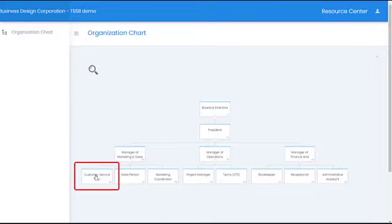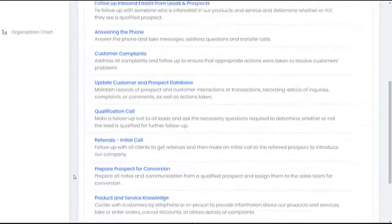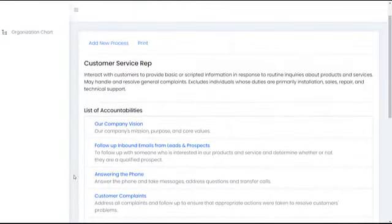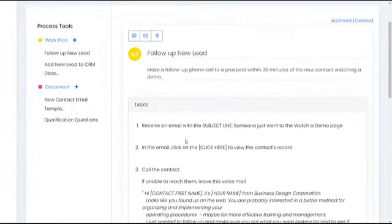What makes it different is that clicking on any of the roles or boxes on your chart opens up the complete operating manual for that position. And then clicking on any of the process names listed on that job description reveals the exact set of instructions.